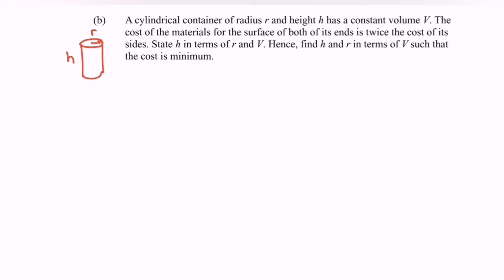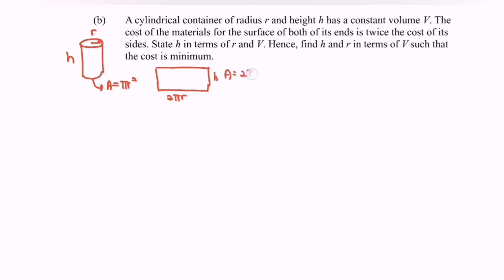The cost of the material for the surface of both its ends is twice the cost of its side. The side refers to the body of the cylinder. The area for the ends is A = πr², and the area for the side or body is A = 2πrh, where the circumference is 2πr and height is h.